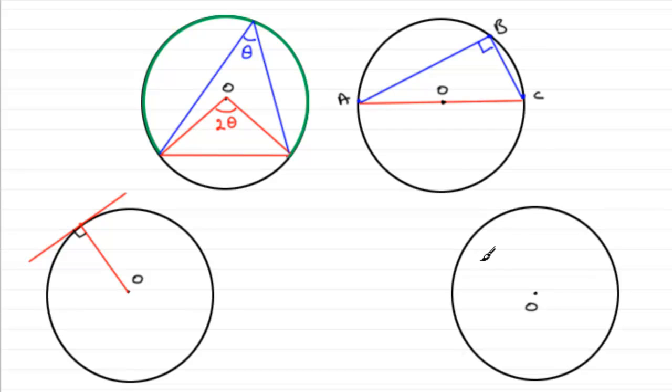Another kind of question that's asked a lot in coordinate geometry for circles is that you're given, say, two chords. Let's mark in some chords again. We'll have this one here. You're given the coordinates, say, of the endpoints of the chord.